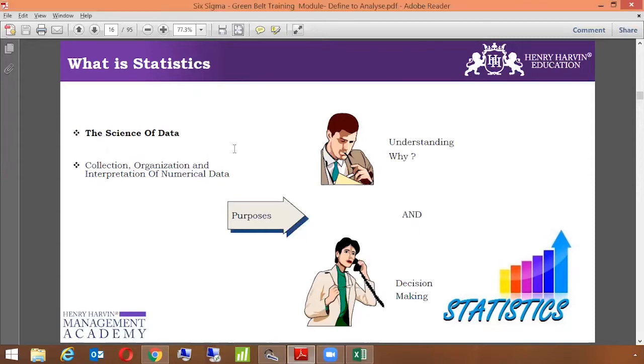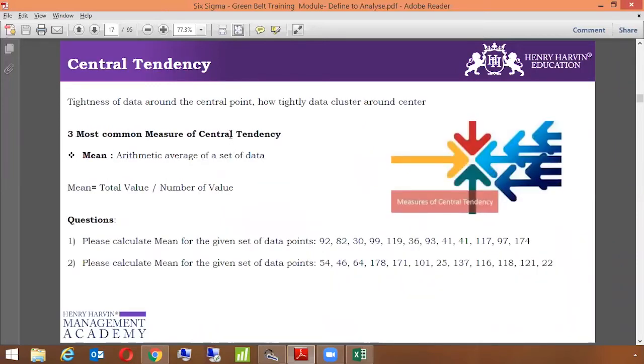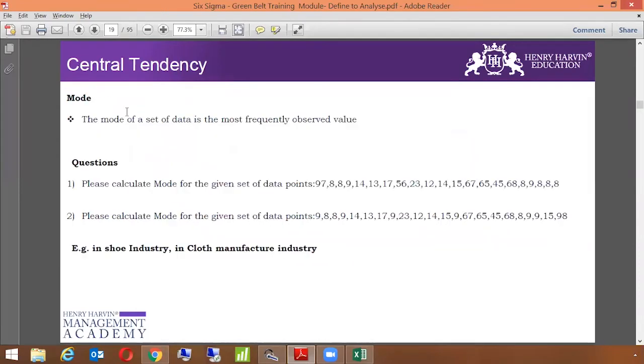Now we're going to talk about central tendency. In basic statistics, central tendency is the tightness of data around the central point - how tightly data clusters around center, meaning how far the data points are from the central point. There are three most common measures of central tendency: mean, median, and mode.